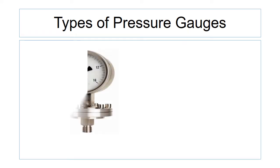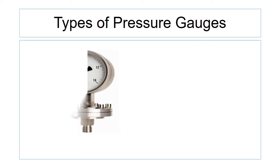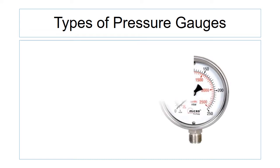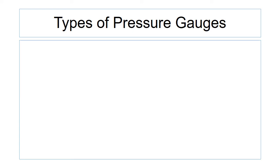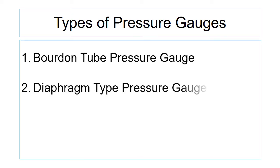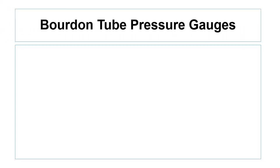Various types of pressure gauges are available based on their sensing elements. There are four types of pressure gauges based on their sensing elements: Bourdon tube pressure gauge, diaphragm type pressure gauge, bellows type pressure gauge, and capsule type pressure gauge.